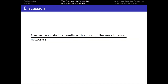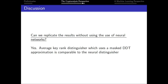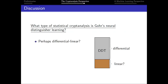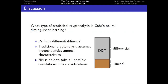Now we can answer our main questions. Can we replicate the results? Yes — the degree of closeness between the two distinguishers is extremely high, convincing us they test for very similar properties. As for what type of cryptanalysis the neural distinguisher is learning, we expect something along the lines of differential-linear. However, unlike traditional cryptanalysis which relies on independence among characteristics, the neural distinguisher is able to take all of them and all correlations into consideration. For the next part, Adrian will be taking over.